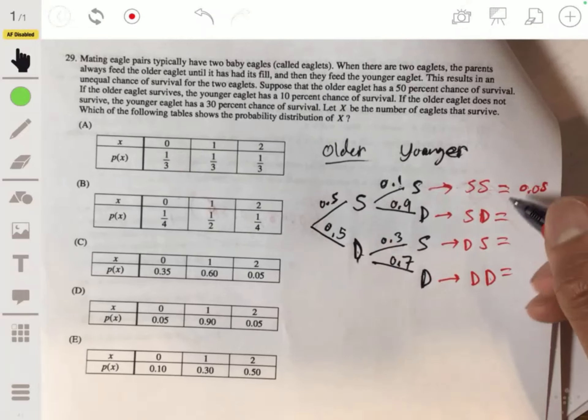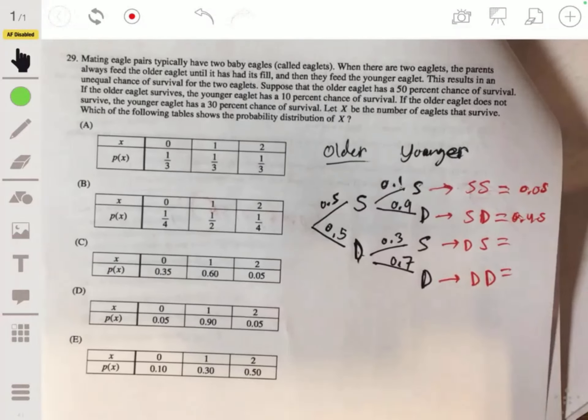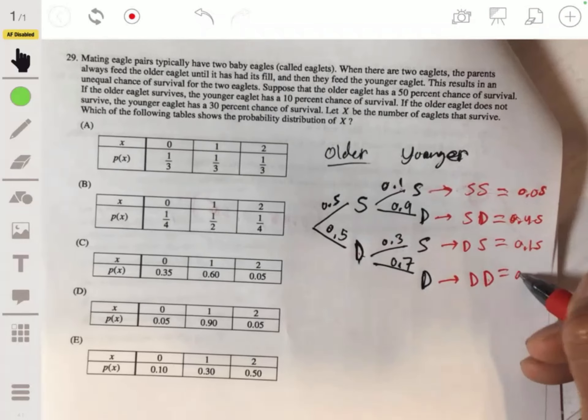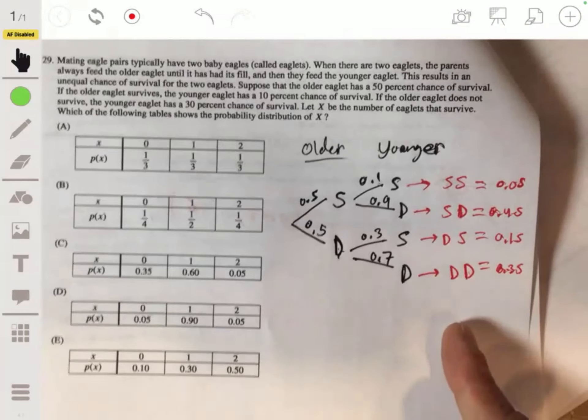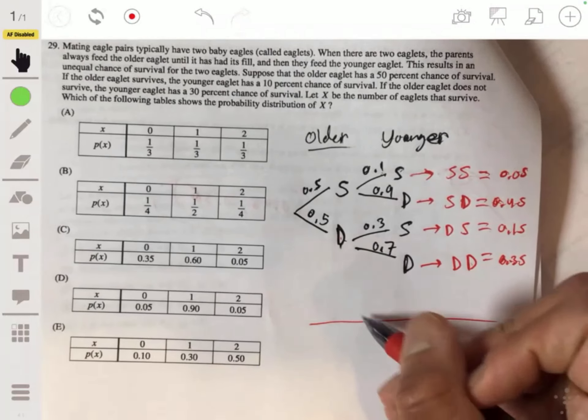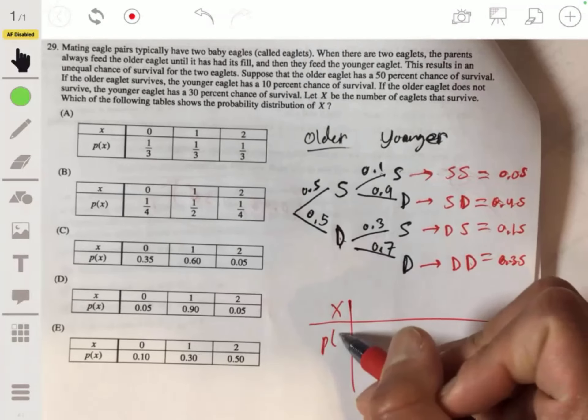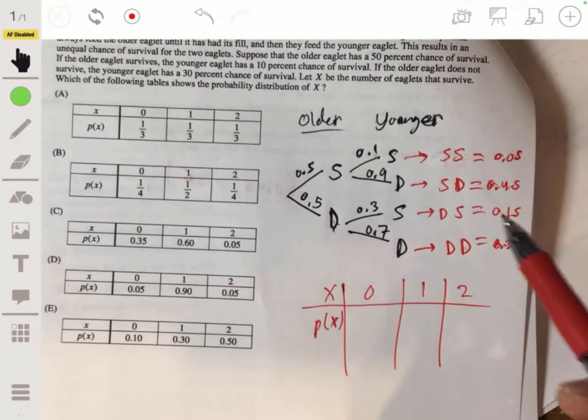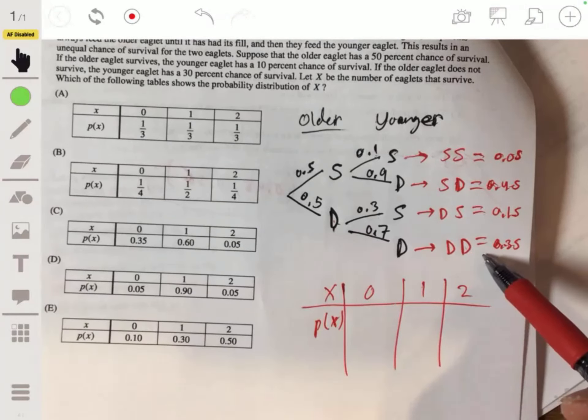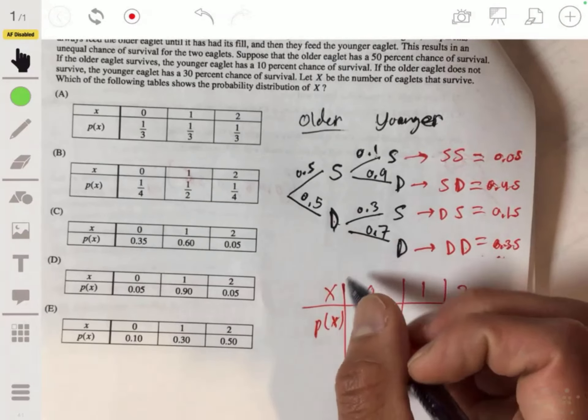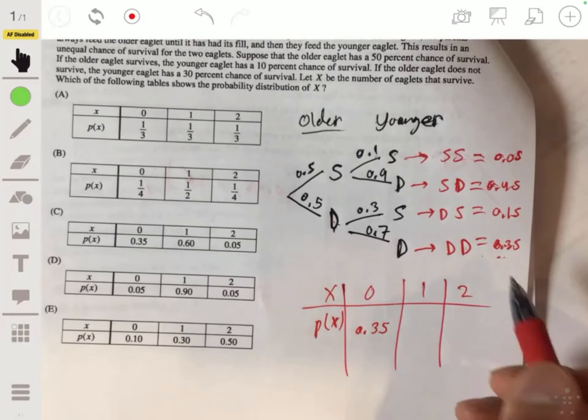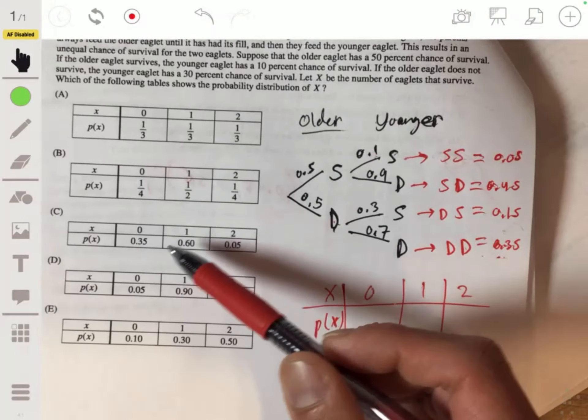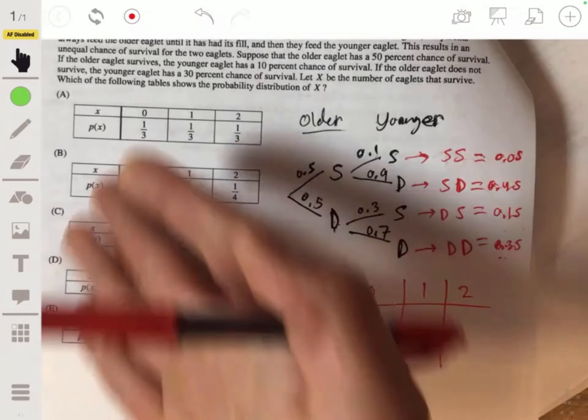0.5 times 0.3, 0.15. 0.5 times 0.7, so 0.35. So then to figure out the probabilities for 0, 1, and 2 eaglets surviving, 0 would be when they both die. That would just be the 0.35. And that's all you have to do. Like once you see that, you're good. Well, I'm just going to finish the problem. It's going to be C because none of the other ones even have 0.35.